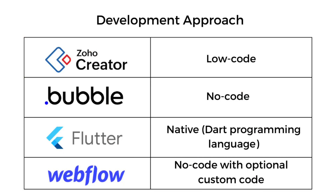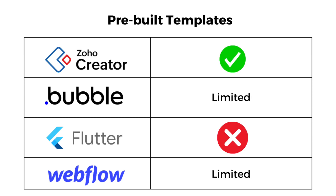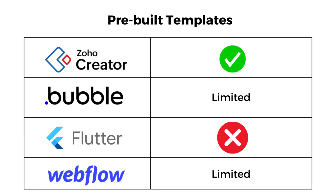Starting off from development approach: Zoho Creator is a low-code app development platform, Bubble is no-code, Flutter offers its native Dart programming language, and Webflow is no-code with optional custom code. For pre-built templates: Zoho Creator offers a wide range, Bubble and Webflow offer a limited number, and Flutter doesn't have any pre-built templates.